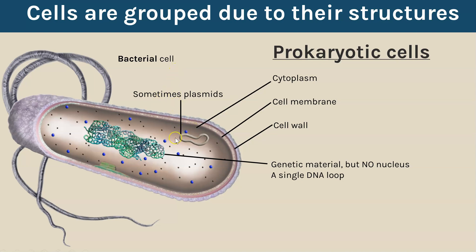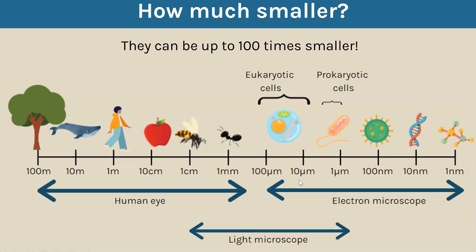Some bacteria also have a plasmid, which is a circular loop of DNA — this is only sometimes present. You might also notice tail-like structures called flagella, which are also only sometimes found and help the bacteria to swim and move around. Because these are only sometimes present, you wouldn't get marks for them in an exam. The key structures always present — and worth marks — are cytoplasm, cell membrane, cell wall, and genetic material as a single loop not inside a nucleus.